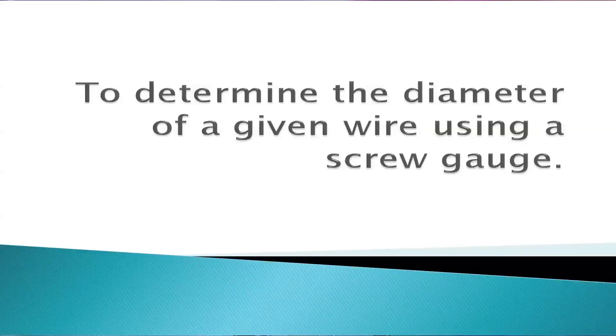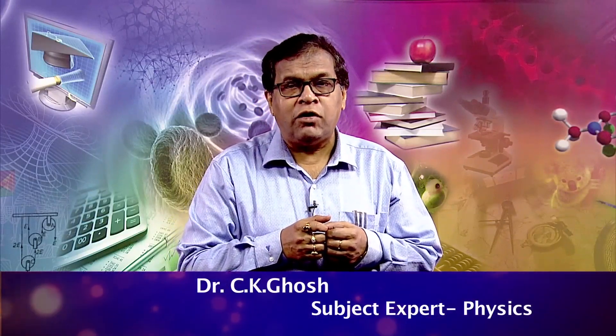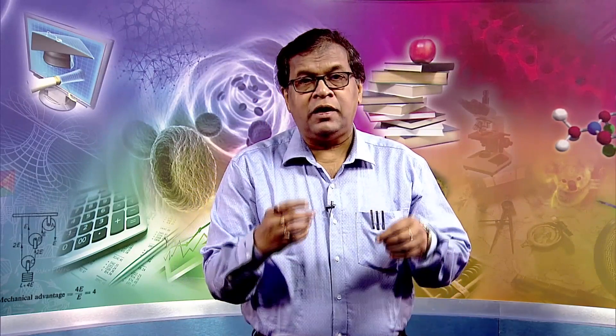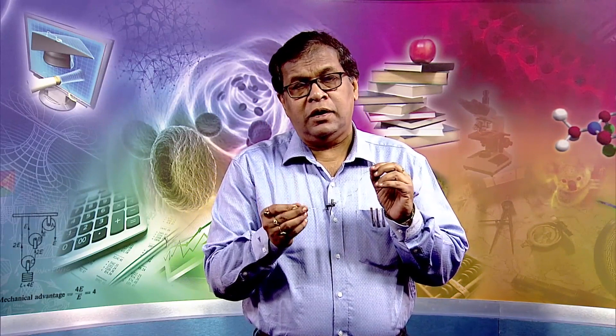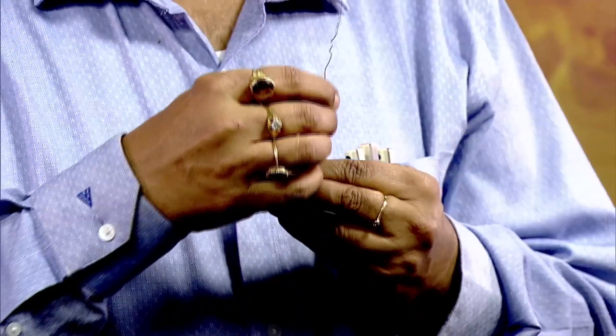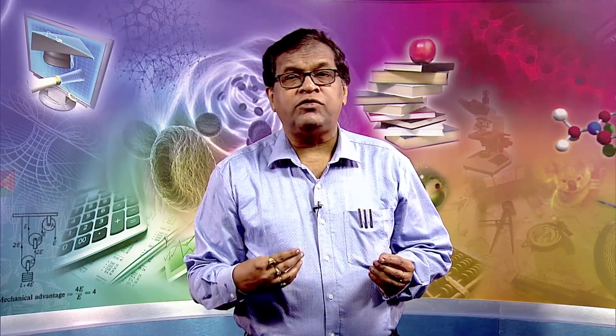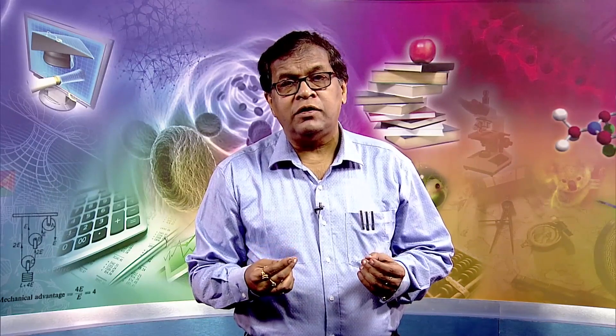Dear learners, we shall learn to determine the diameter of a given wire using a screw gauge. You have learned the use of vernier calipers, where the least count was 0.01 centimeter. Now, for measuring the diameter of a wire like this, perhaps you cannot use the calipers — it would be inconvenient to hold this object between the jaws of the calipers. So here we use a screw gauge, and we will see that the least count of this device is less than that of a vernier calipers.